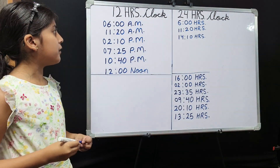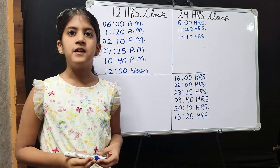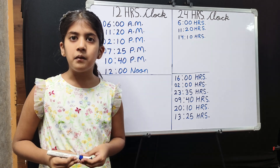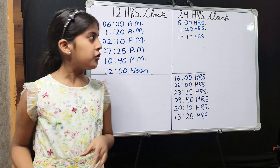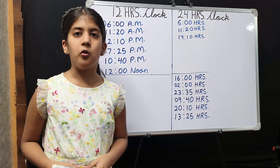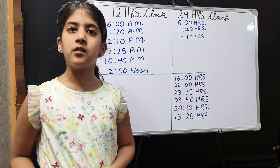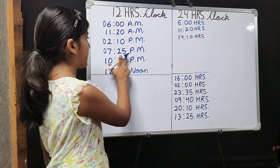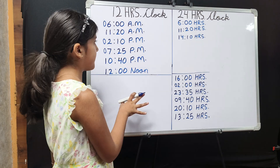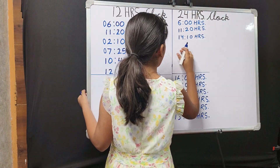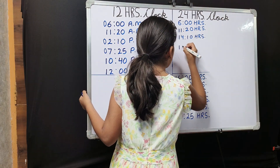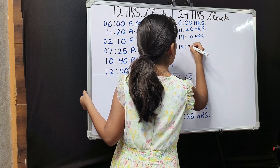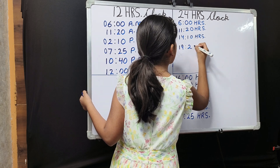7:25 PM. In 7:25 PM, I will just add 12 to 7. So 7 plus 12 is 19. And I will write 25 as it is. So my answer is 1925 hours.